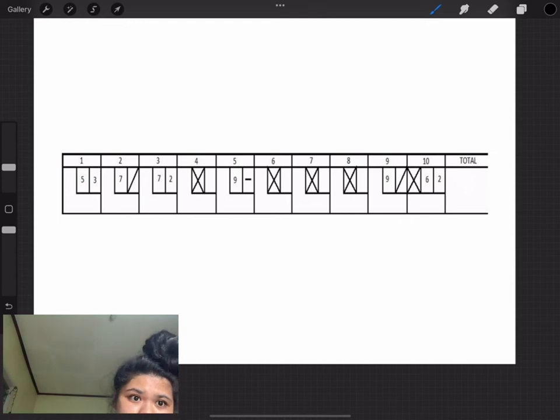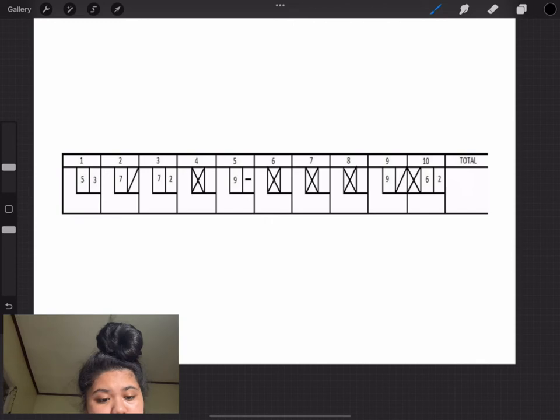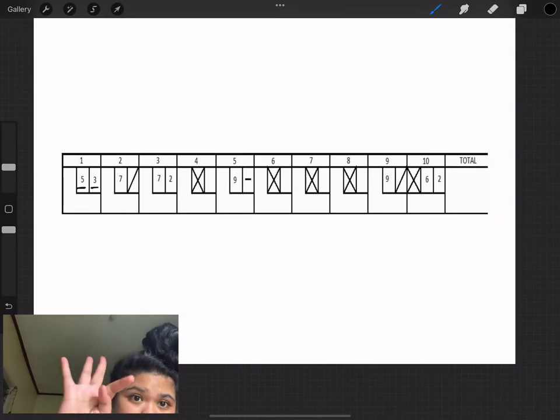Here in the first frame, you can see that the person playing struck out 5 balls in their first try and 3 balls in their second, which gives us a total score of 8.